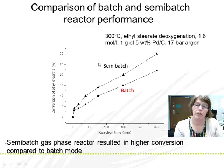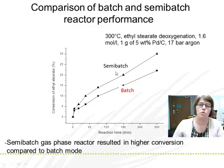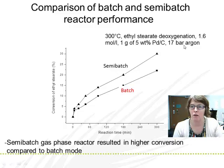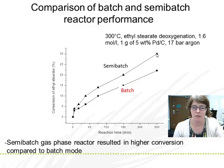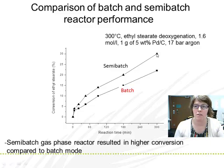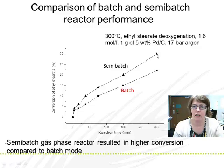We also wanted to study the effect of reactor configuration. We tested either batch mode — everything in batch — or a semi-batch mode where argon inert gas is flowing through the reactor. Ethyl stearate was the model compound. The result is that the semi-batch reactor gives quite much higher conversion. The reason is that one product is carbon monoxide, which is a catalyst poison. When the gas flushes the catalyst during reaction, we achieve higher conversion. So semi-batch gas-flow mode is better.